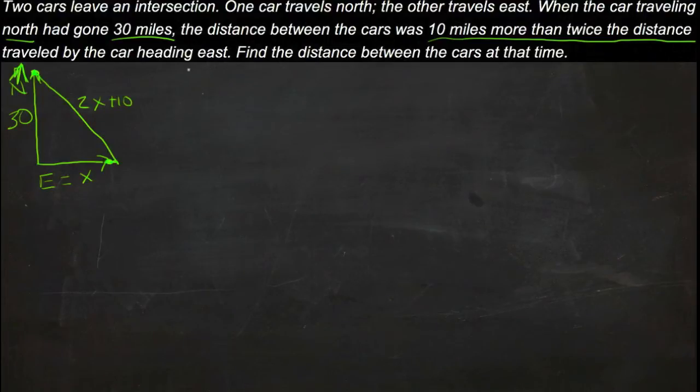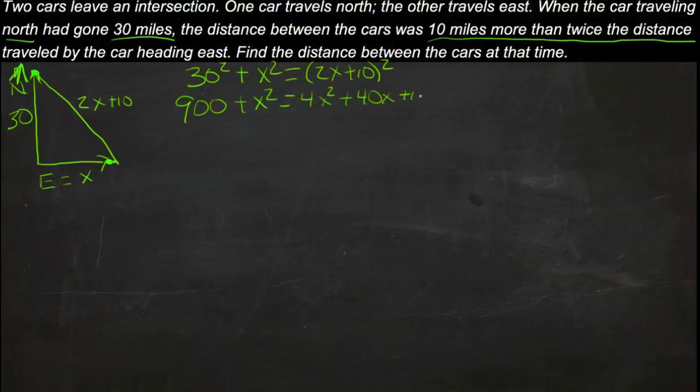So we can use Pythagorean Theorem. We'll get 30 squared plus x squared equals 2x plus 10 squared. It gives us 900 plus x squared equals 4x squared plus 20x plus 20x is 40x plus 100.